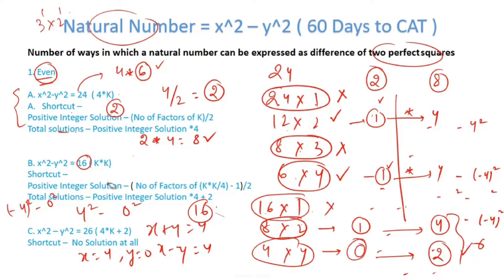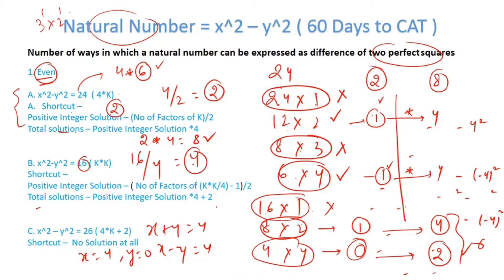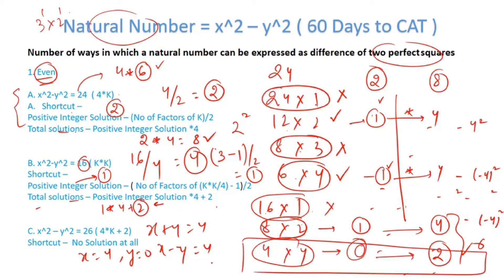So total solutions for 16 = 4 + 2 = 6. What is the shortcut here? Divide 16 by 4 to get 4. The number of factors of 4 is 3. Then (3-1)/2 = 1, so positive integer solutions = 1. Total solutions = 1×4 + 2 = 6. The extra +2 accounts for the y=0 case we saw. I hope this shortcut is clear.